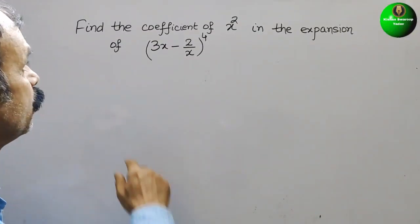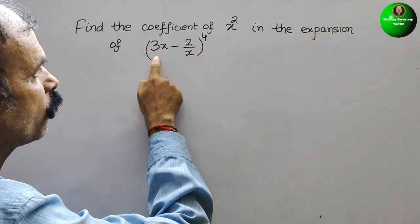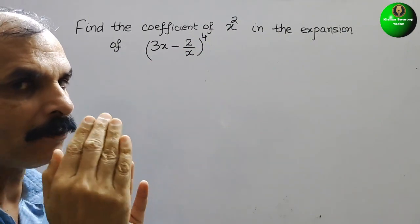Your question is: find the coefficient of x² in the expansion of (3x - 2/x)⁴.